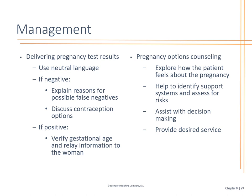When delivering pregnancy test results, it's helpful to know ahead of time if this is wanted or not. Discuss false negatives or false positives if it's a urine test. A blood test is pretty accurate, unless not enough time has passed since the missed period. We need to look at gestational age — where are we in this pregnancy? If they find out they're pregnant and they're almost in their third trimester, what do you do if they cannot terminate the pregnancy but do not want it? Assist them with decision making, tell them about options — including adoption — and give them outreach programs and education to help them identify a support system.